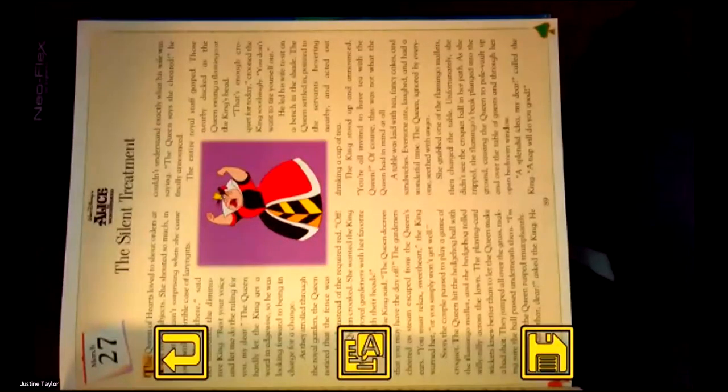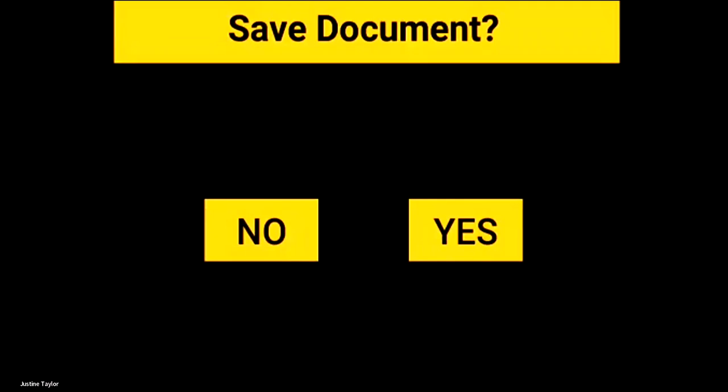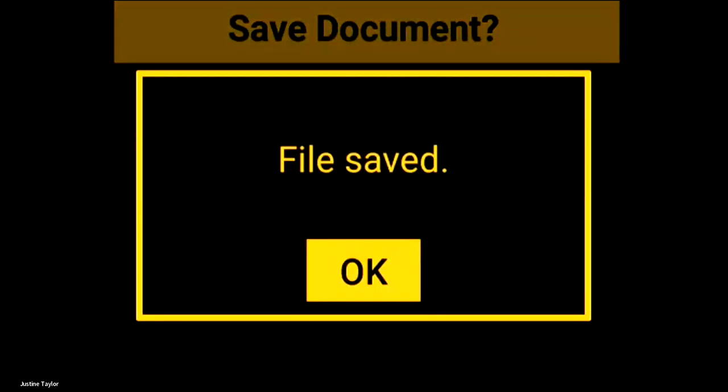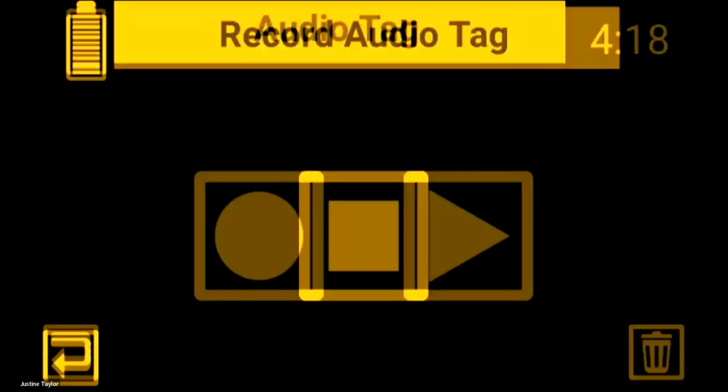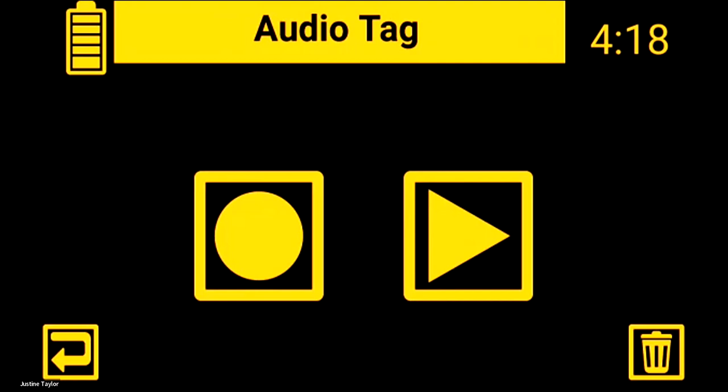Now I can save that. Just hit the save button and say yes to save. It will automatically ask if you want to do an audio tag. The file is saved — do you want to record an audio tag? I'm going to say yes, because I always tag mine when I save them so I can find them later. I'll record the audio tag: 'Bedtime stories.' So I added an audio tag to my file.